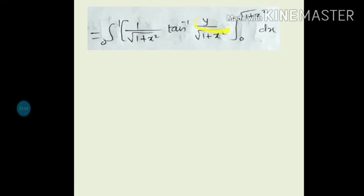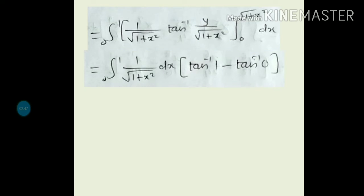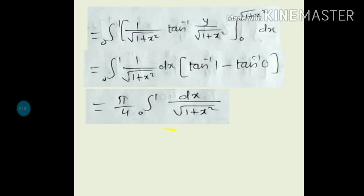Substituting the limits: the upper limit is y = √(1 + x²), so we get tan⁻¹(1) = π/4. Then substituting y = 0 gives tan⁻¹(0) = 0. So the answer simplifies to (π/4) times the integral from 0 to 1 of dx/√(1 + x²). Now we need to integrate this function with respect to x.